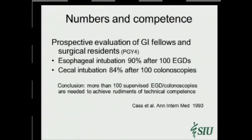What is the evidence that numbers matter, if we're going to suggest that perhaps for a surgeon, the numbers GI societies put forward are not suitable surrogates for competence? One study looked at PGY-4 surgery residents and GI fellows, finding that to achieve just rudimentary competence—a 90% esophageal intubation rate—trainees had to do 100 procedures. To reach the cecum on colonoscopy 84% of the time, they had to do 100 colonoscopies, which is where some of the number-based requirements in the historical literature originate.